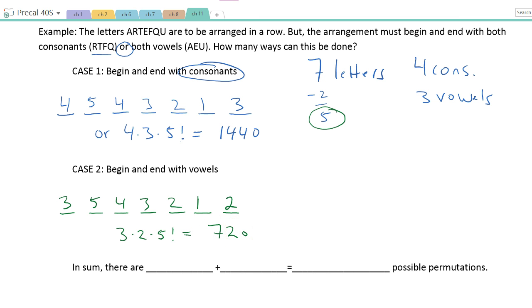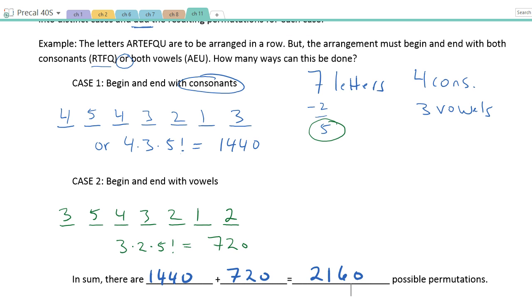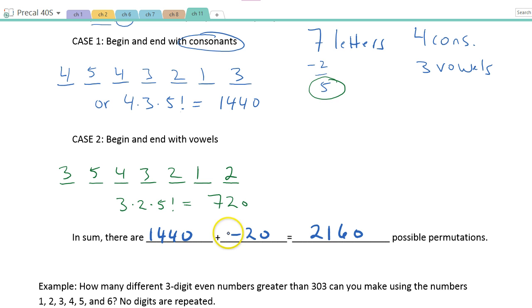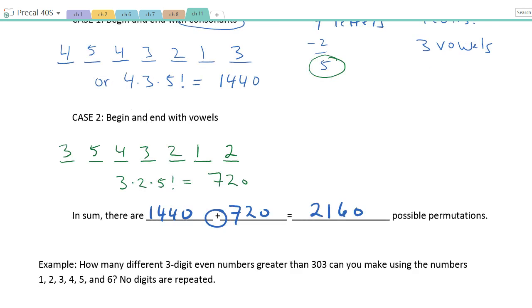So in sum, there will be 1440 plus 720, which gives me 2160 possible permutations. So if I were to do this question, I think I can't do this all in one expression. I have to do two different expressions and say it could either turn out this way or it could turn out that way. And so as a result, I'm adding these two numbers. I'm not multiplying, I'm adding them.